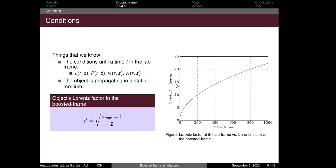There are some conditions we have to take before the boosted frame implementation. The first one is that we know the evolution of the object at times before changing between systems. And the second one is that we assume that in the lab frame, the object is propagating in a static medium. With this in mind, and after doing some math, in the boosted frame the object is going to have a Lorentz factor given by this equation.